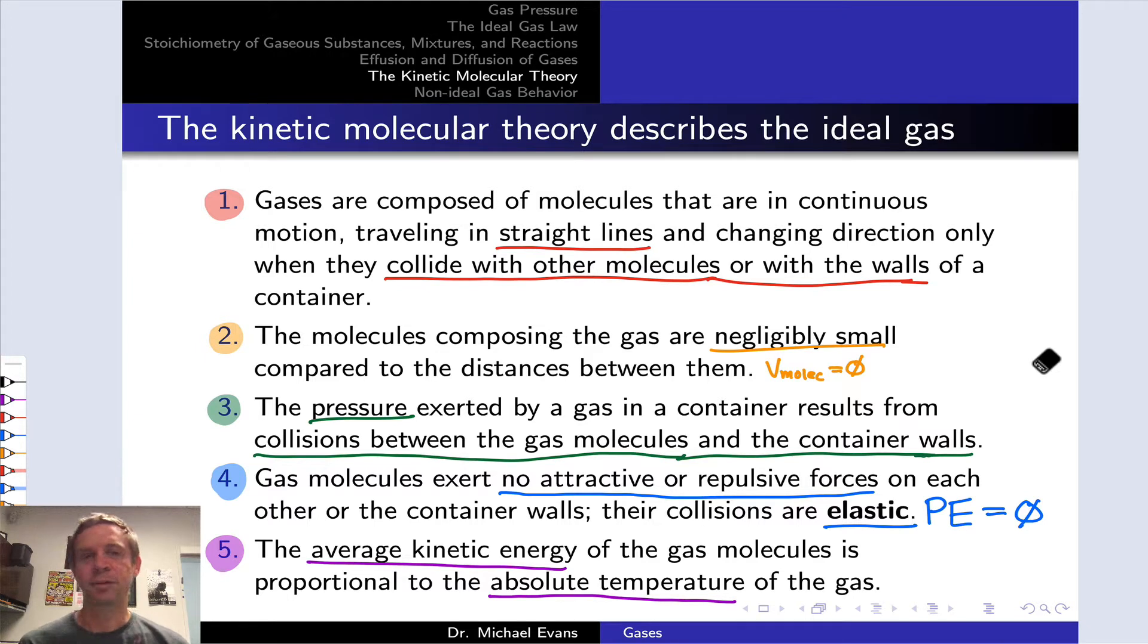The ideal gas model and kinetic molecular theory provided 19th century chemists and physicists with a highly intuitive and mathematically friendly model for the behavior of gases.